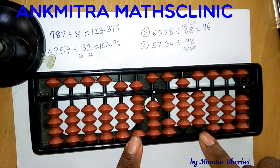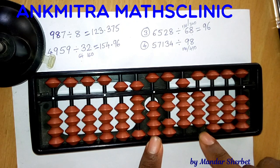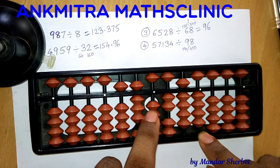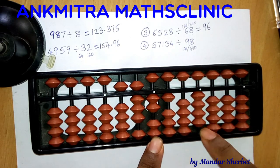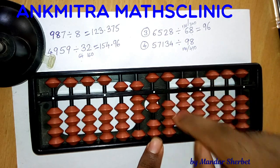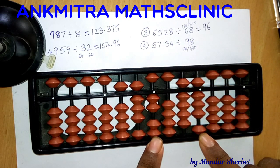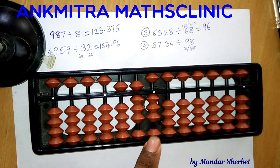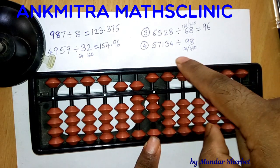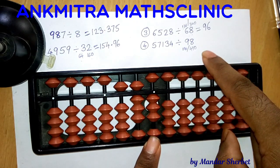Moving to the units place, we have 294 on the question set. From 294 we can subtract 2 times 98, which is 196. I'll add 2 on the units place of the answer set and subtract 196: for 6 I'll do plus 4 minus 10. We're left with 98, which is exactly 1 times the divisor. I'll add 1 on the answer set and subtract 98 — the question set is now complete. The final answer is 583.